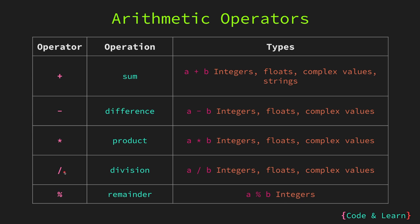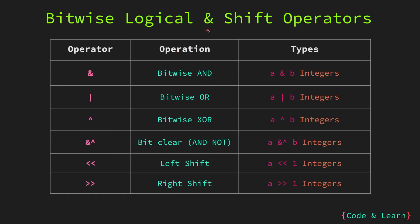The forward slash represents the division operator and is used to divide the operand on the left side by the operand on the right side. So a / b means a divided by b. It can be used for all numeric data types. The percent sign is used to get the remainder of the operand on the left when divided by the operand on the right. a % b will give you the remainder value when a is divided by b. It can only be used with integer data types, which are int and unsigned int. Now let us discuss bitwise, logical, and shift operators. These are used for binary operations.